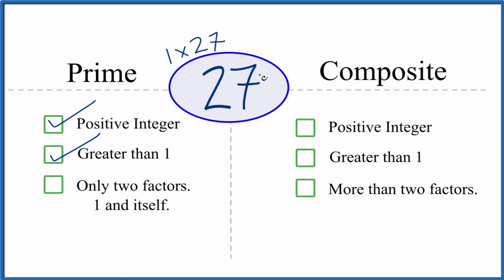But are there any other factors that divide evenly into 27? Turns out that 3 times 9, that equals 27. So 27 is not a prime number.